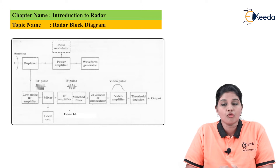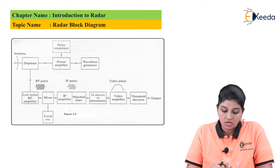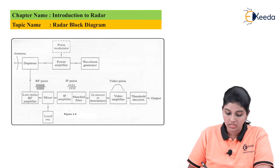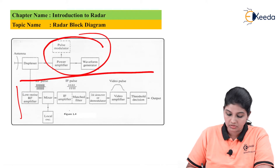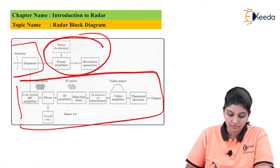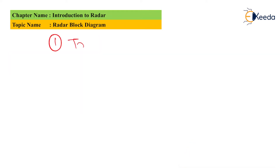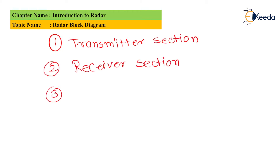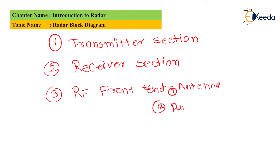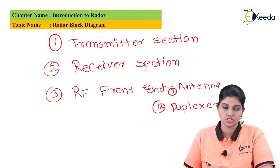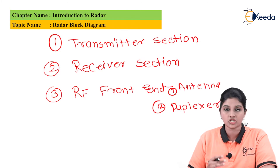The block diagram of a typical radar system consists of three main parts: the first part is the transmitter section, the second part is the receiver section, and the third part is the RF front end, which consists of the antenna along with the diplexor. These three are considered as the important parts of the radar system.